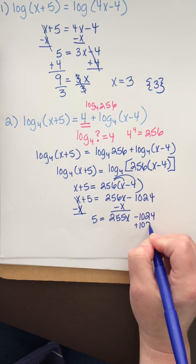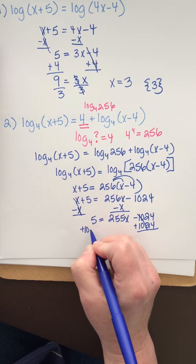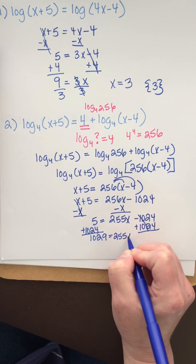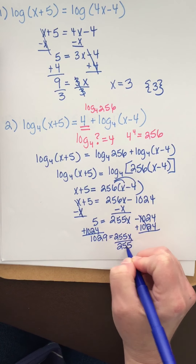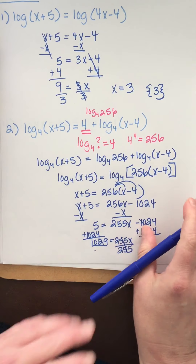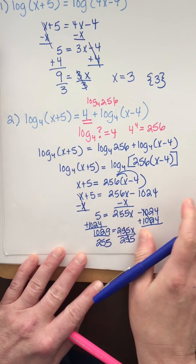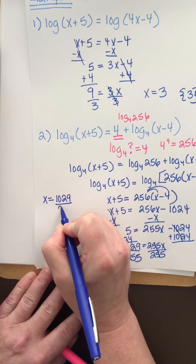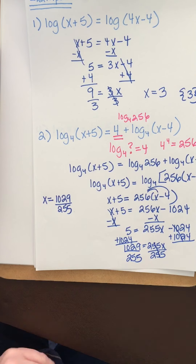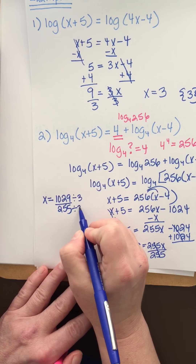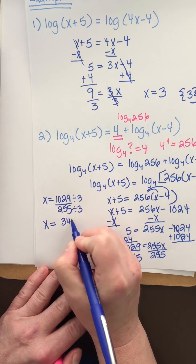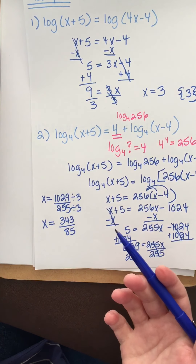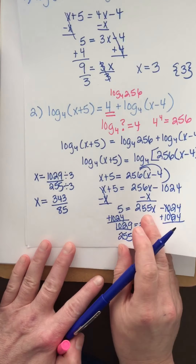Now to get rid of the minus 1024, I'm going to add. That'll be 1029 equals 255x. To undo multiplication, we divide. Let's go over here — running out of room. So we have x equals 1029 over 255. I want to reduce that fraction; I can divide both numerator and denominator by three. That gives me 343 over 85. If I plug that in, I'm taking the log of a positive number, so that is my one solution.